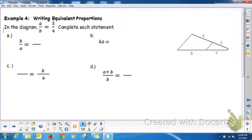So writing equivalent proportions. In the diagram, a, b equals 3 fourths. So a, b, that's this side, is equal to 3 fourths. So if we flip it and it becomes the reciprocal, b over a, it would be equal to, we want to flip the second one, 4 over 3.